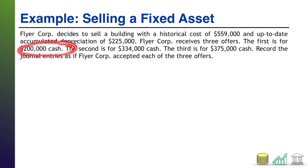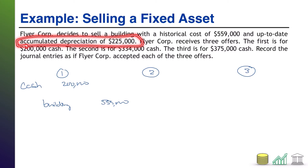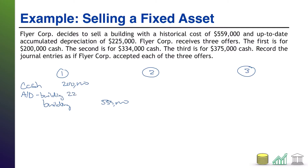Let's start with the receipt of $200,000 cash — option one. You are getting cash, specifically $200,000. You are getting rid of a building with a historical cost of $559,000, so you have a ledger building with a debit balance of $559,000 in it. To get rid of that, we need to credit building for $559,000. Whenever you get rid of a fixed asset, any accumulated depreciation that goes with that asset also has to be disposed of. Accumulated depreciation, being a contra asset, has a credit balance in this case of $225,000, so we need to debit accumulated depreciation for $225,000.